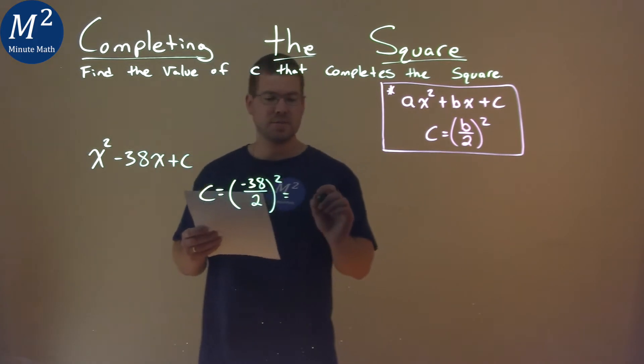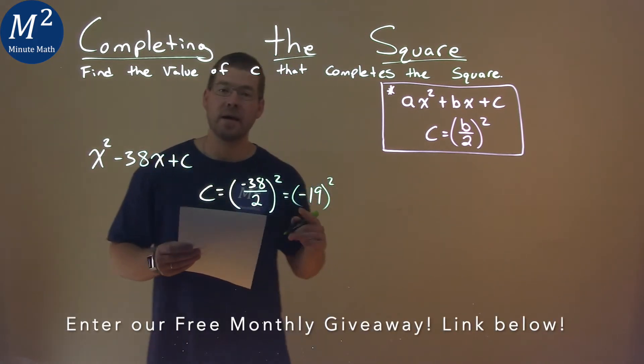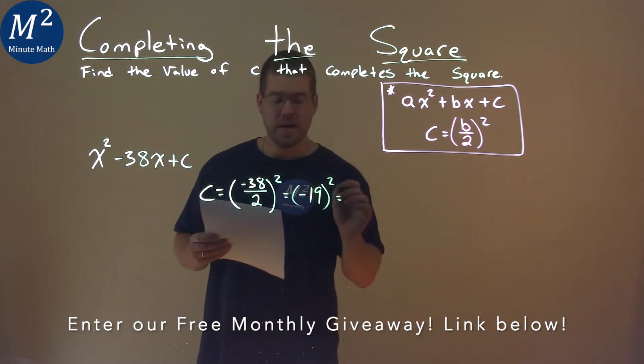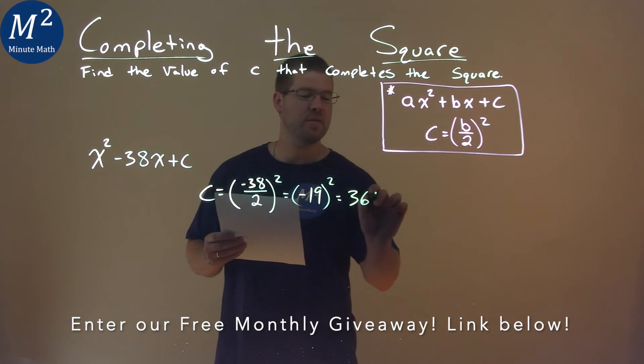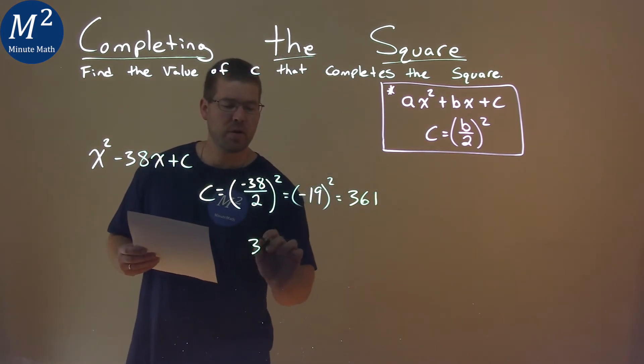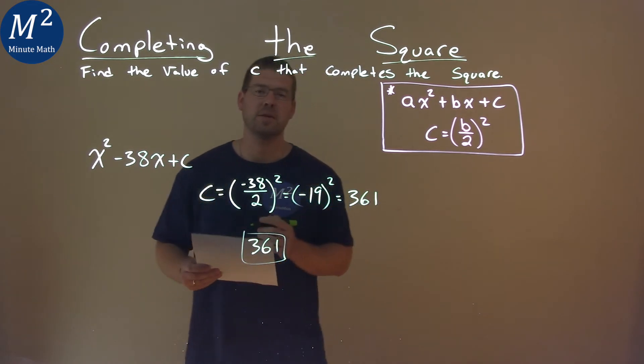Negative 38 divided by 2 is negative 19, and when we square a negative number, it becomes positive. Negative 19 squared is 361. So 361 is the c value that completes the square.